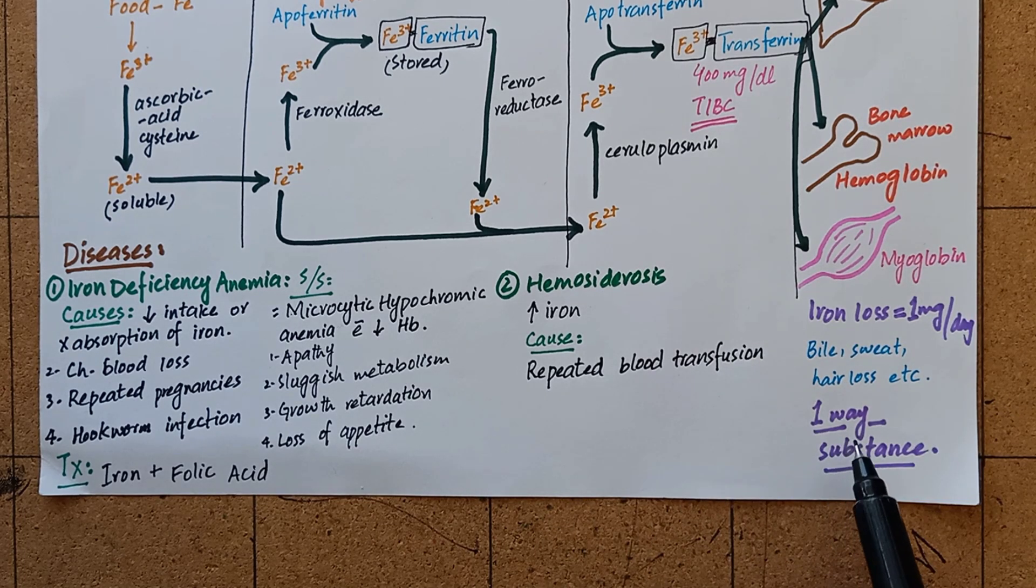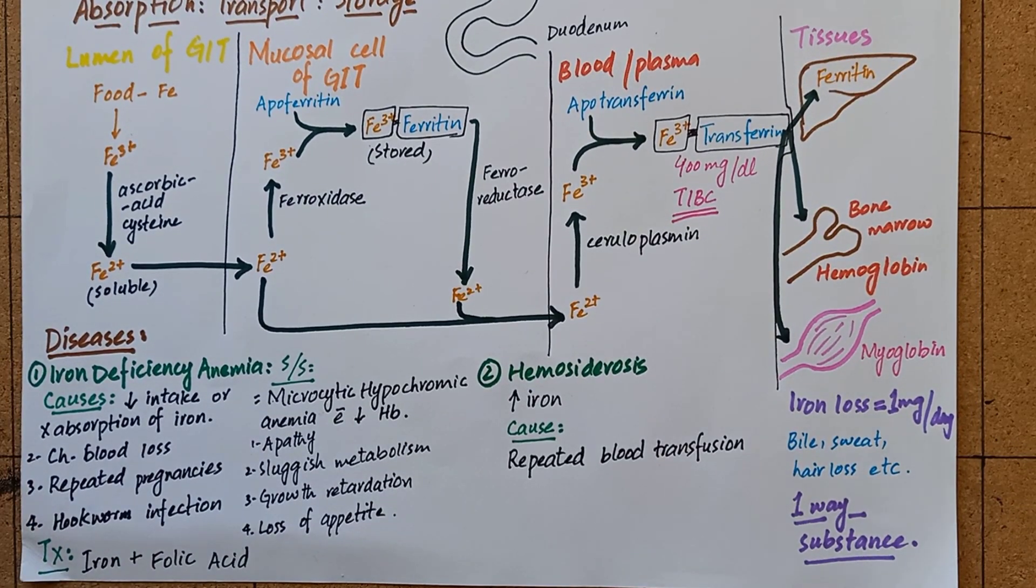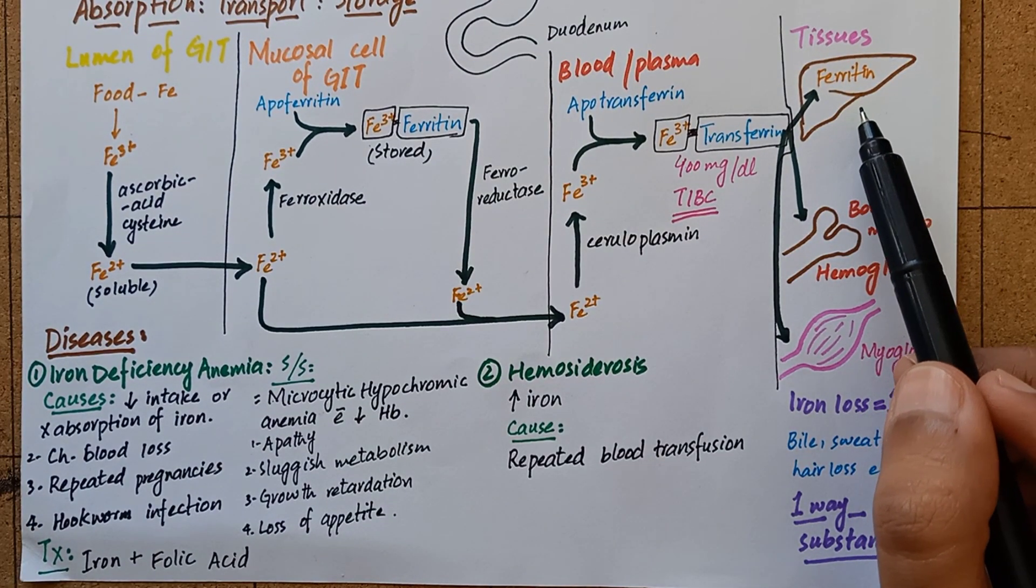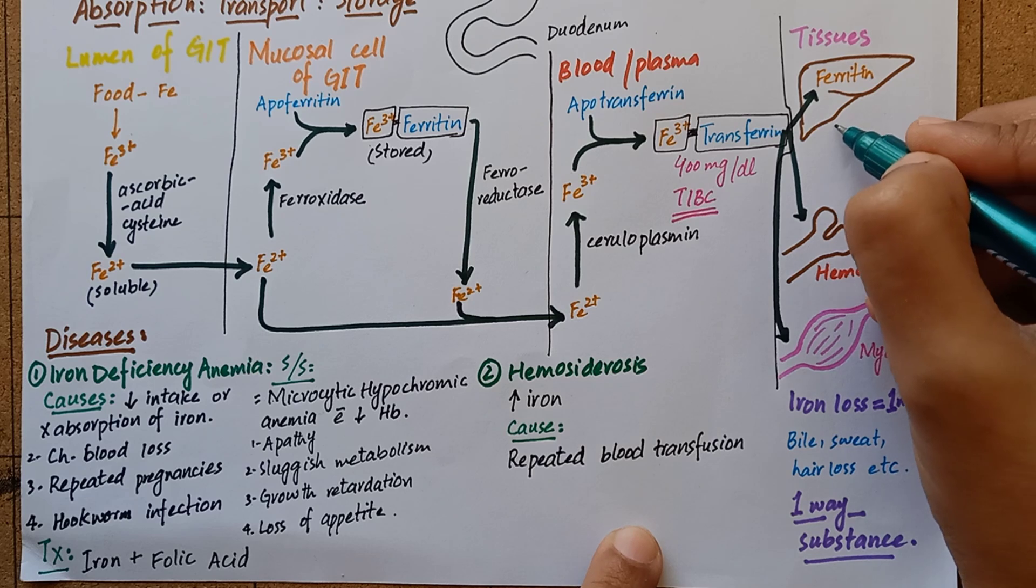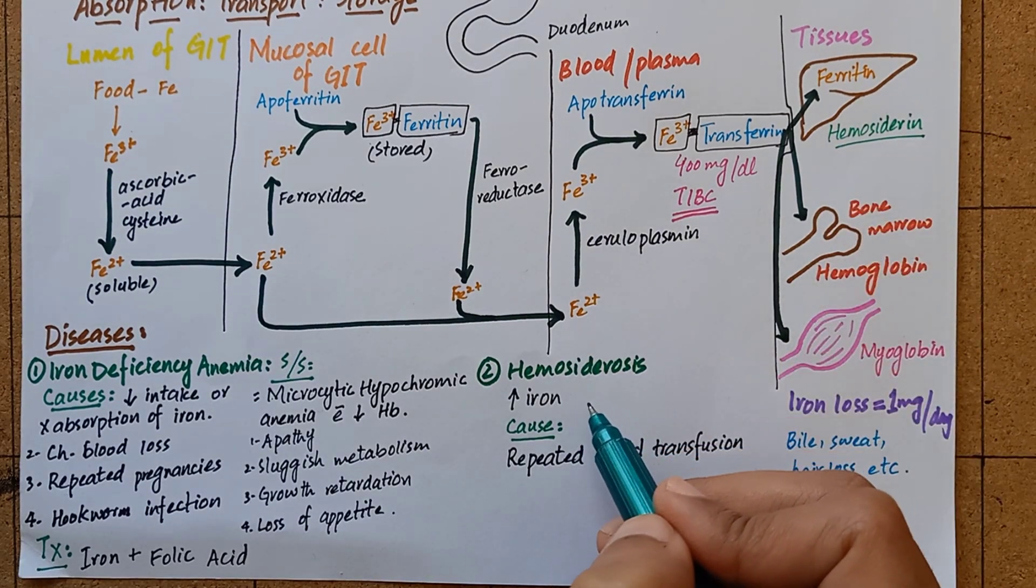As I have already stated that iron is a one-way compound, once it enters the body, it cannot escape. So when ferritin stores of iron are full, the excessive iron is deposited as hemosiderin in liver causing hemosiderosis.